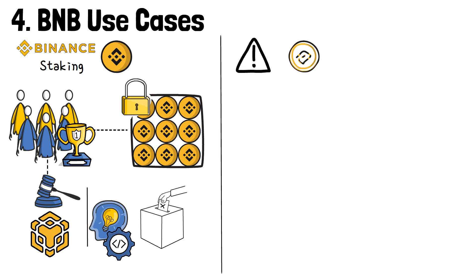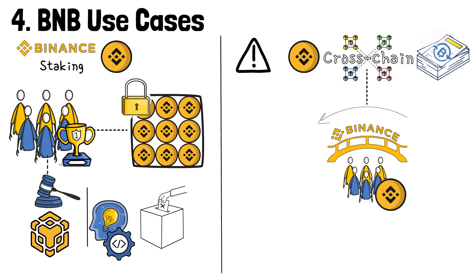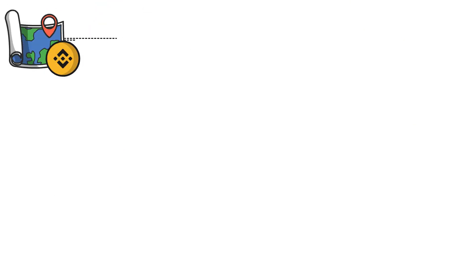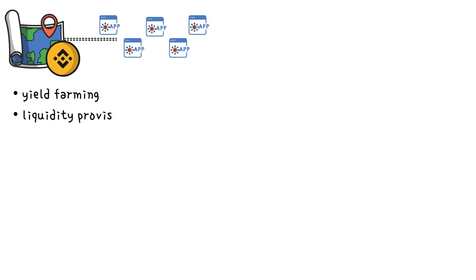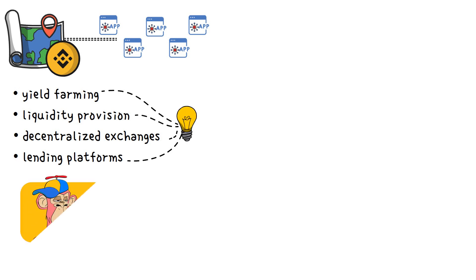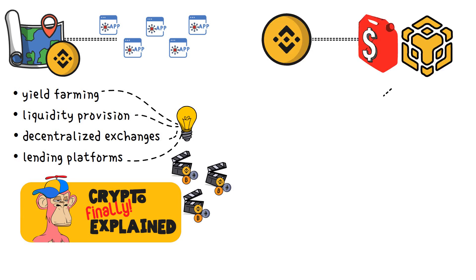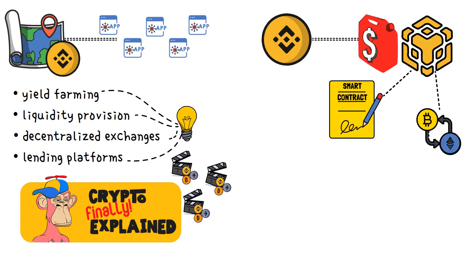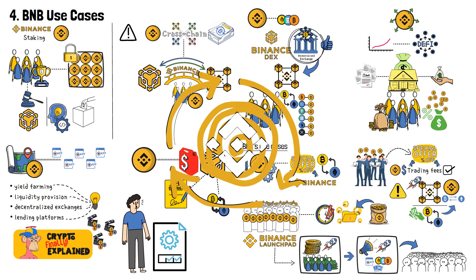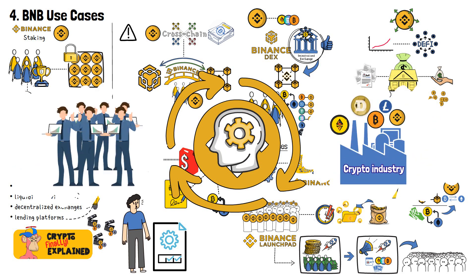BNB can also be used for cross-chain transactions. Through Binance's bridge, users can move BNB seamlessly between different blockchains, such as from the Binance Smart Chain to the Binance Chain, or vice versa. Since it's a widely accepted cryptocurrency, BNB can be used in various DeFi applications, including yield farming, liquidity provision, and participation in decentralized exchanges and lending platforms. And finally, BNB is used to pay gas fees on the Binance Smart Chain, powering smart contract interactions and transactions on the blockchain. The variety of BNB use cases illustrates how intricate and interconnected the Binance ecosystem really is, and understanding it allows us to truly estimate the importance of Binance for regular traders and the entire crypto industry.